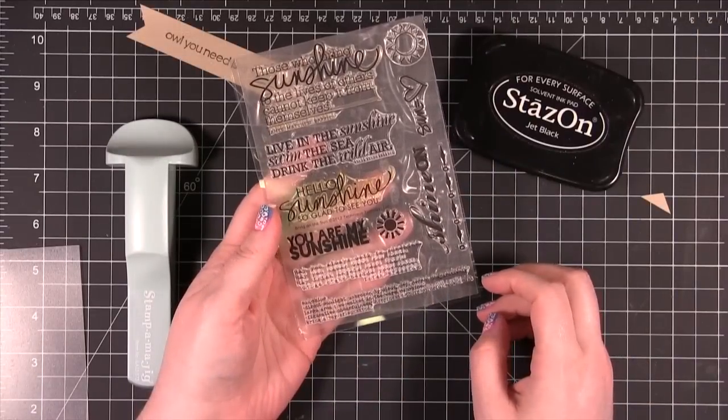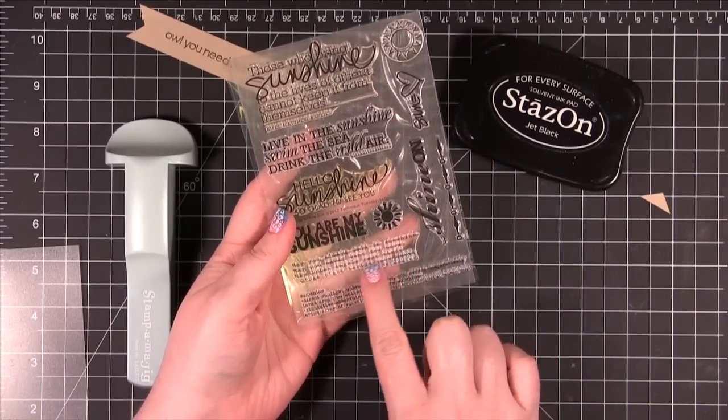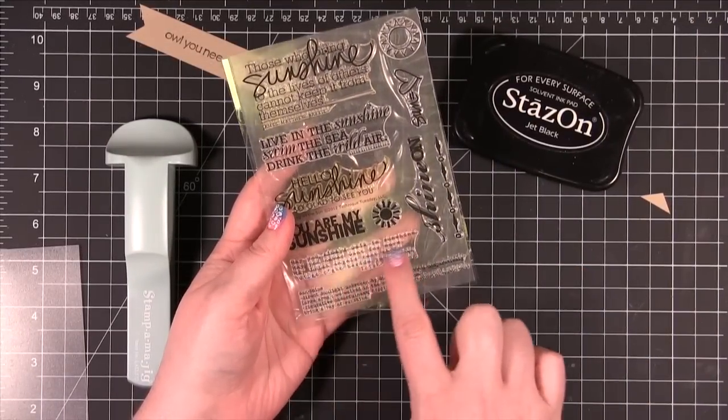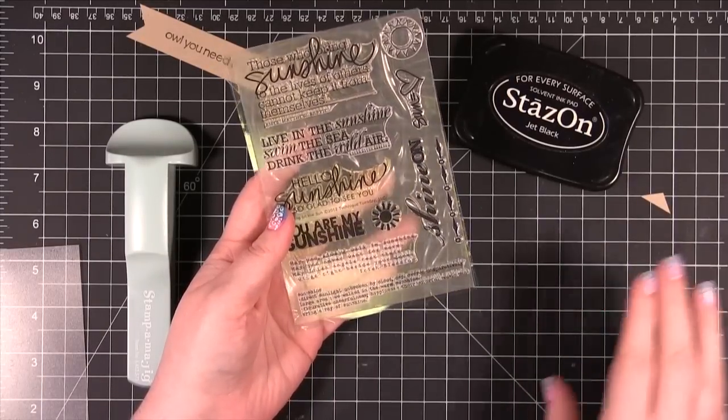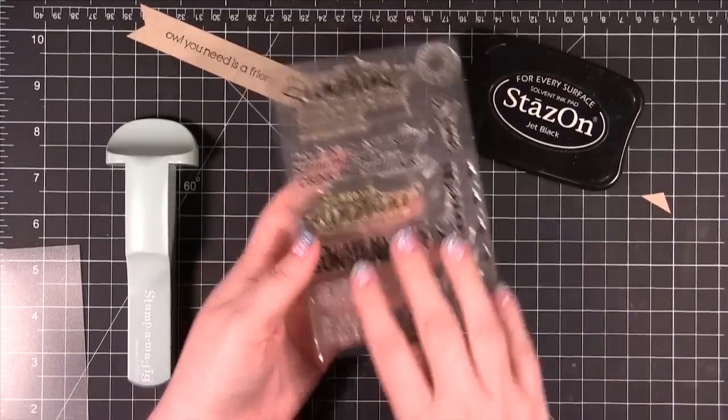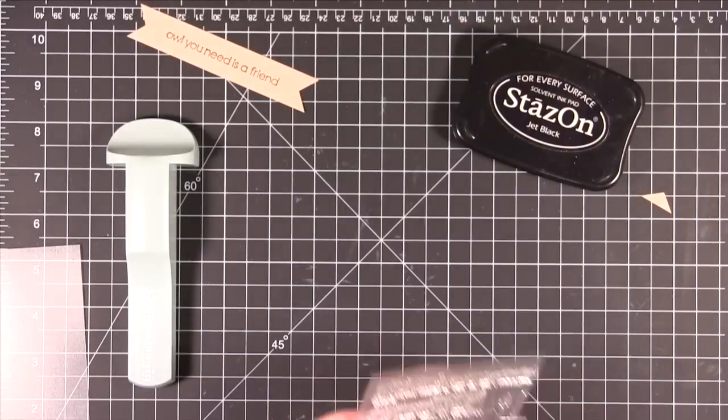Another instance when you might want to use a Stampamajig is when you have a really delicate stamp like this word stamp right here. Because if you rock your block at all it will cause some of the letters to fill in with ink. So you have to be really careful with them.